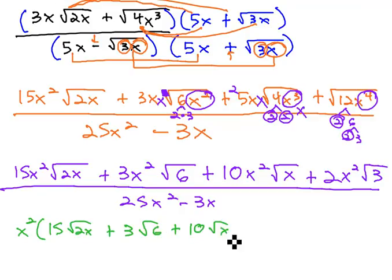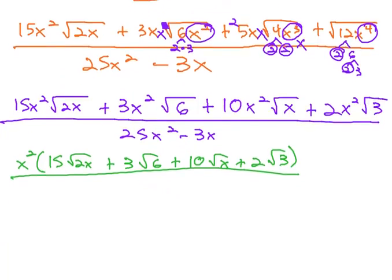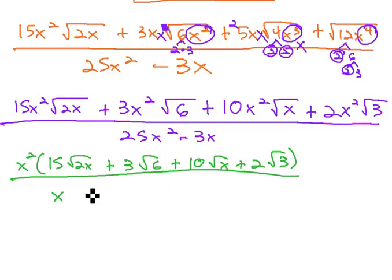Plus 10 square root of x, plus 2 square root of 3, all over, factoring a GCF of x out, 25x minus 3.